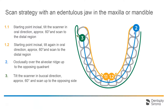The starting point is incisal, and we tilt the scanner by approximately 60 degrees in oral direction. Then we scan in one of the two directions, from incisal to distal. We start again incisal, tilt the scanner again approximately by 60 degrees in oral direction, and scan the other side. When we have reached the most distal position, we perform an occlusal scan up to the end of the opposing quadrant.